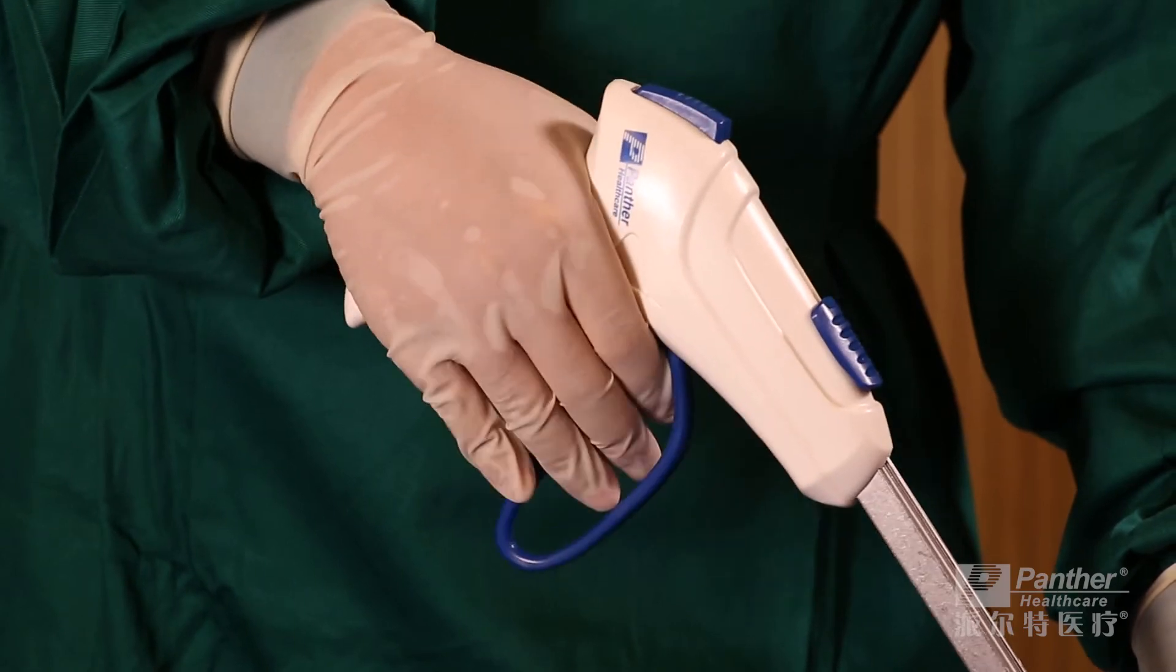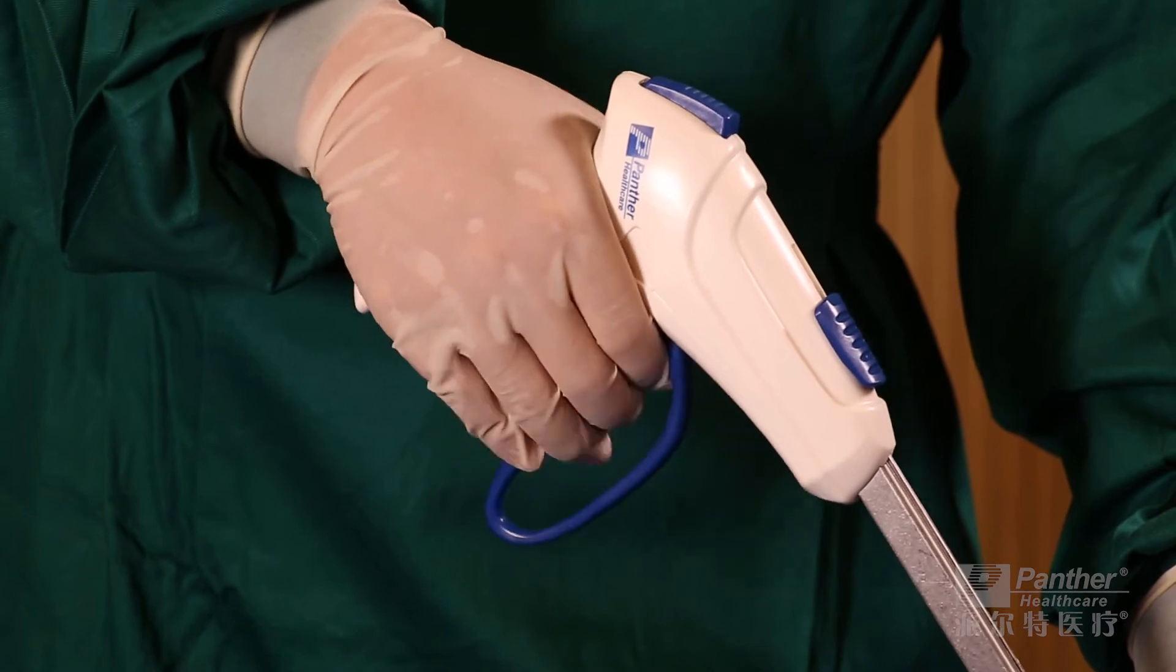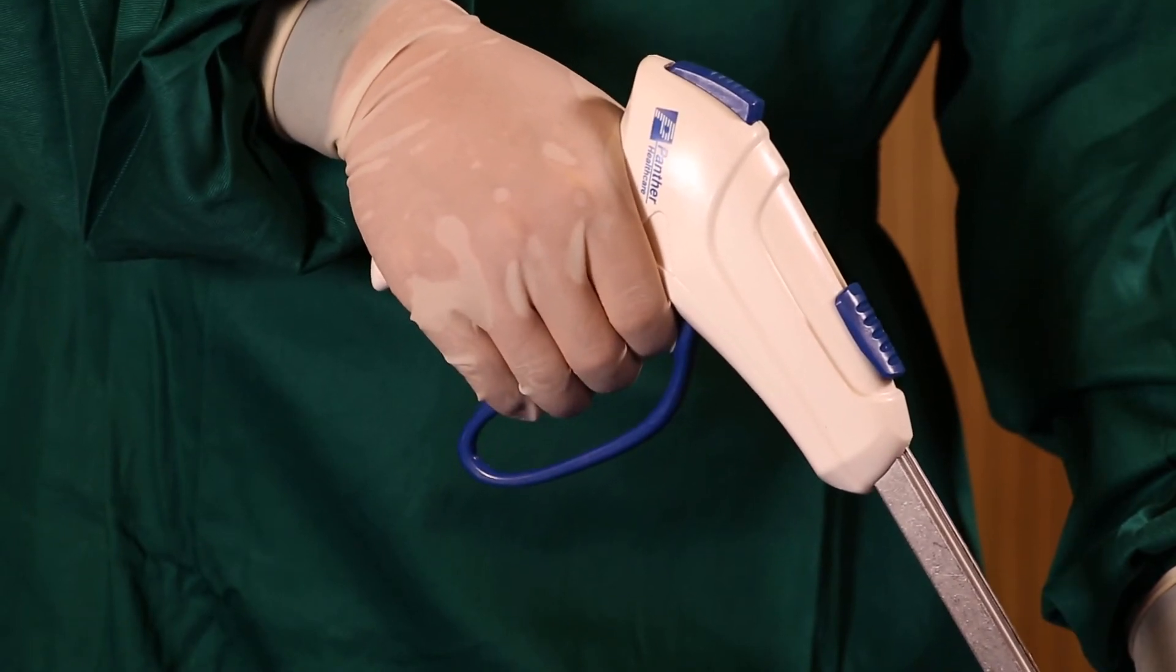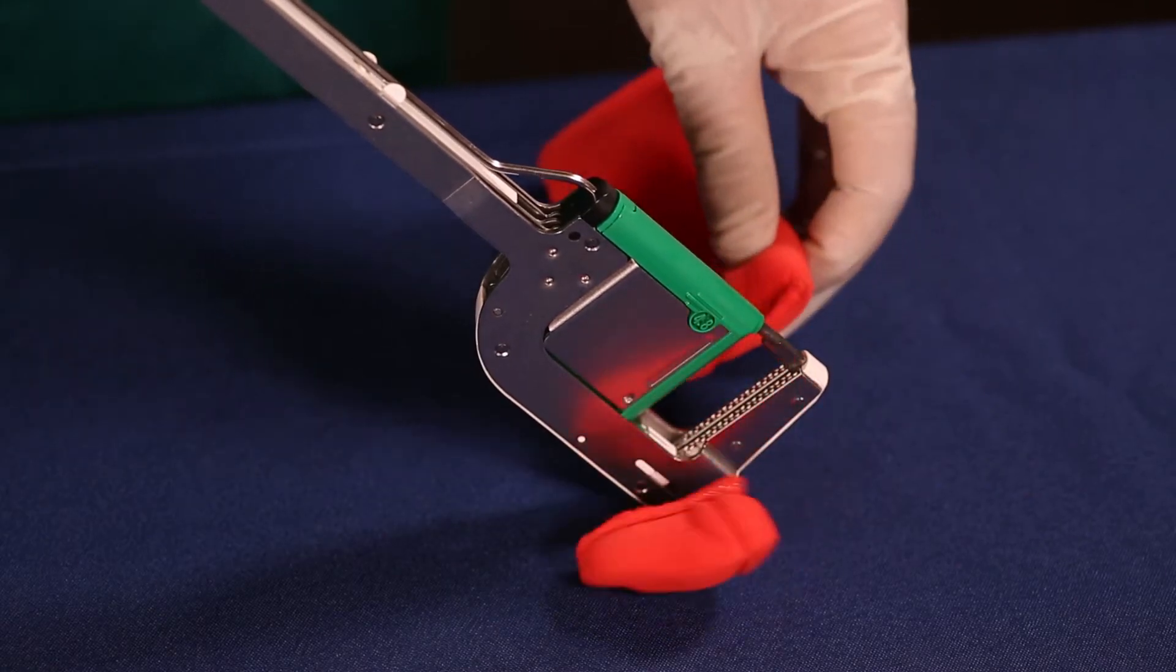Continuously squeeze the firing handle until it stops to complete the stapling and cutting functions. Press the release button. The jaws will open and the tissue will fall out.